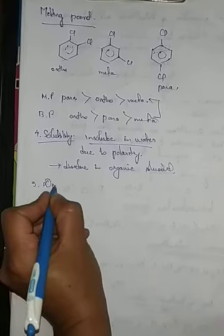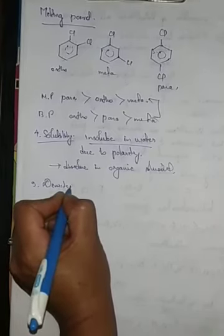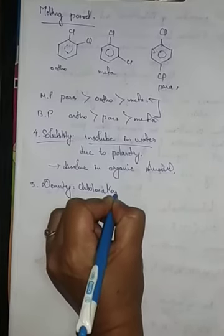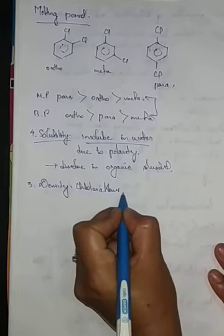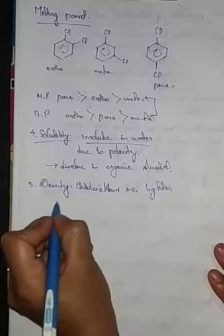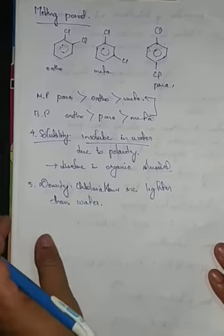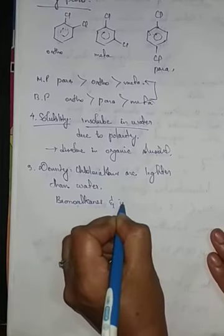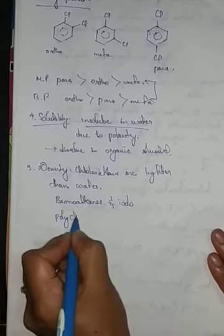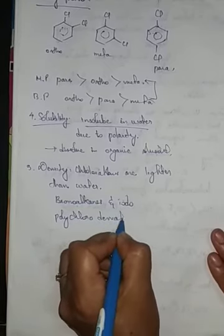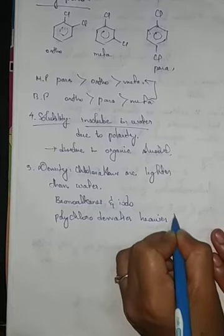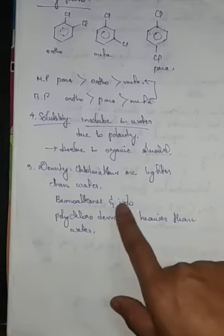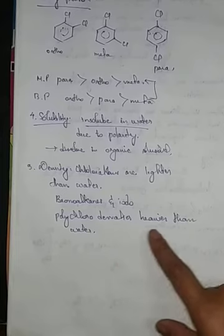The fifth property is density. Chloroalkanes are lighter than water. Whereas bromoalkanes, iodoalkanes, and polychloroalkanes are heavier than water.